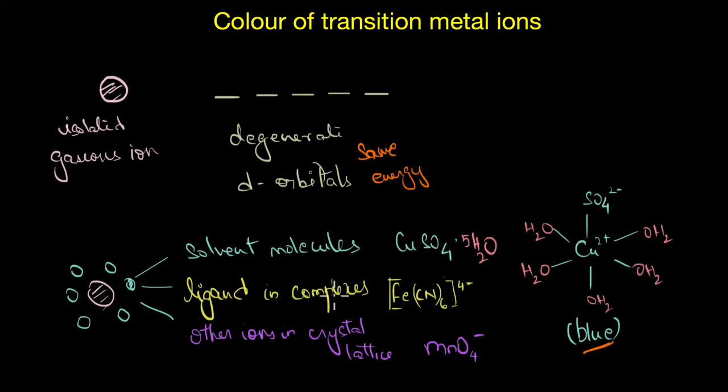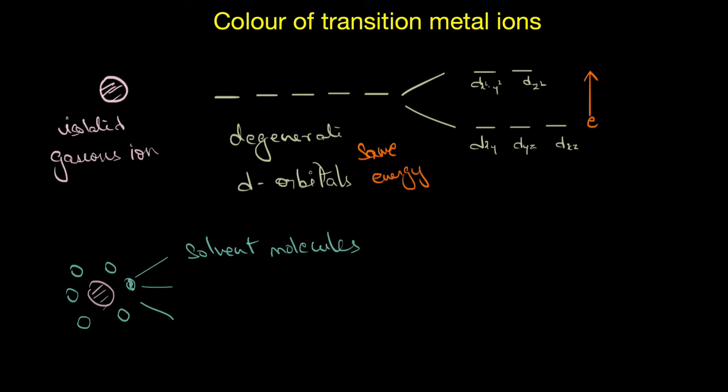And these surrounding molecules will have some kind of effect on the transition metal ion. The surrounding groups affect the degeneracy of the d orbitals and as a result, the d orbitals split into two groups, two groups of d orbitals of two different energy levels. Because of this, we can easily promote an electron from one d level to the other d level of higher energy. As the energy difference between the two d levels is not very high, the light is absorbed in the visible region.